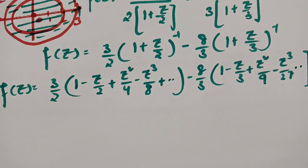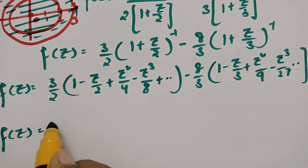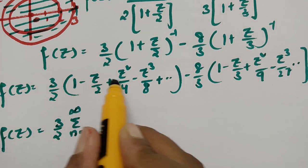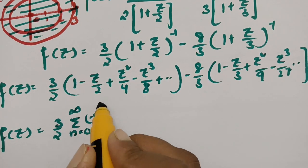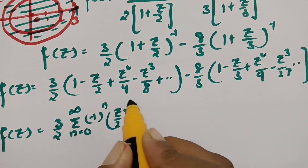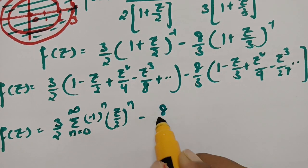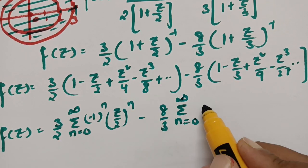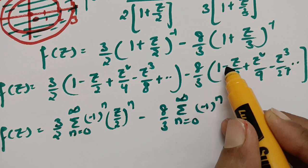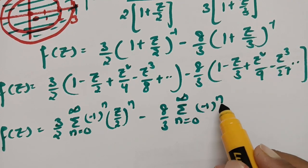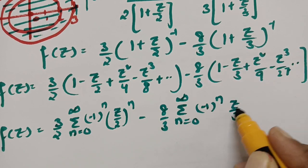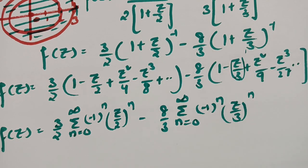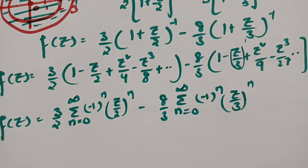So f(z) = (3/2)(1 + z/2)⁻¹ - (8/3)(1 + z/3)⁻¹. Using binomial expansion: f(z) = (3/2)(1 - z/2 + z²/4 - z³/8 + ...) - (8/3)(1 - z/3 + z²/9 - z³/27 + ...). This can be written as (3/2)·Σ(n=0 to ∞) (-1)ⁿ(z/2)ⁿ minus (8/3)·Σ(n=0 to ∞) (-1)ⁿ(z/3)ⁿ.